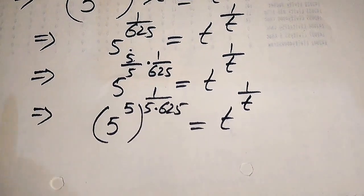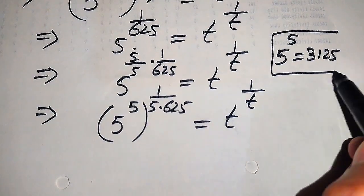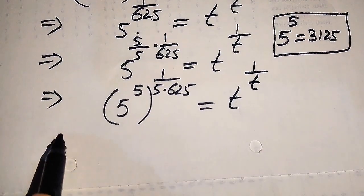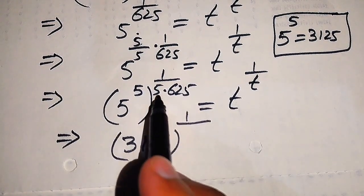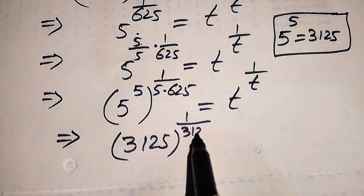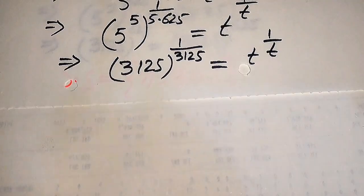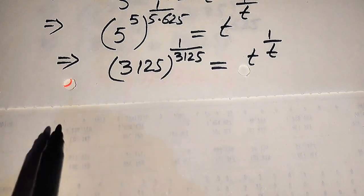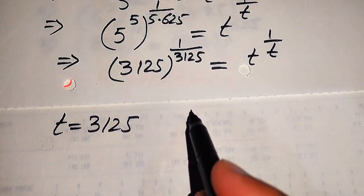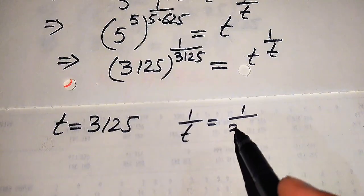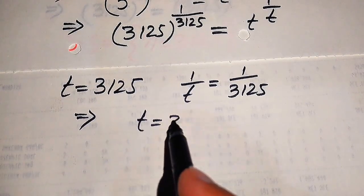We know that 5 to the power of 5 equals 3125. Using this, the left hand side becomes 3125 to the power of 1 over 3125, since 5 times 625 equals 3125. So we have 3125 to the power of 1 over 3125 equals t to the power of 1 over t. Comparing both sides, we get t equals 3125, and comparing the exponents we get 1 over t equals 1 over 3125, which again gives t equals 3125.